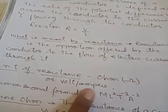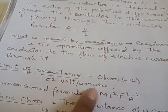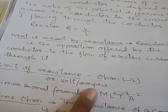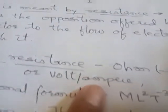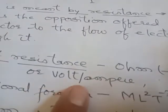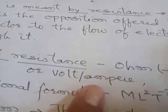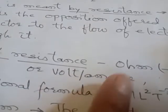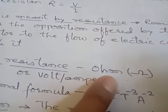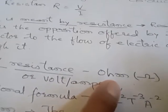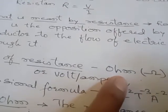Resistance is measured in volts per ampere, and this unit is called the Ohm — a simple example of the unit of resistance.